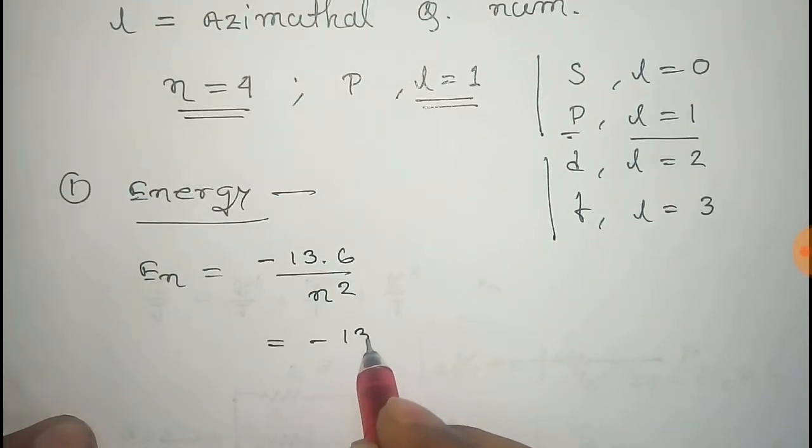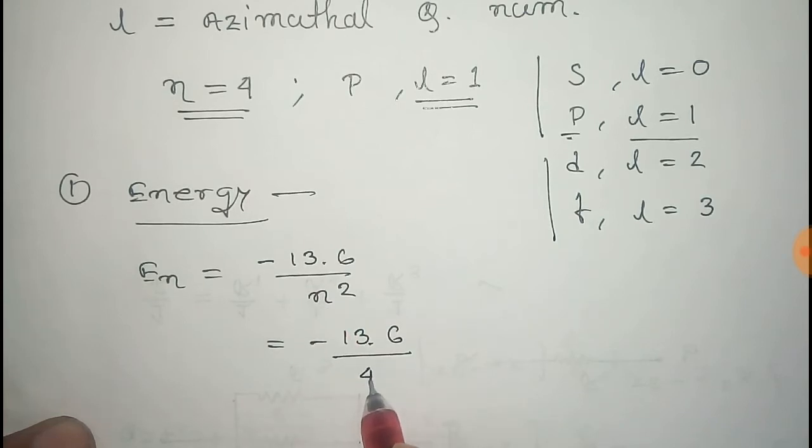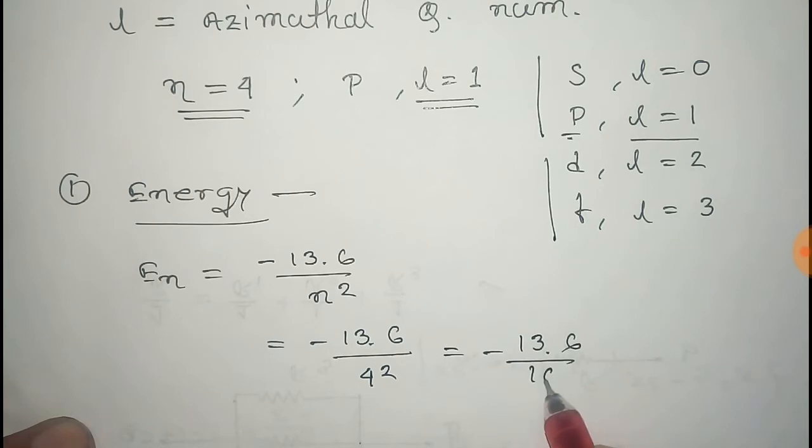Put the value of n there, so 13.6 by 4 squared, that is 13.6 by 16, thus we get 0.85 eV.